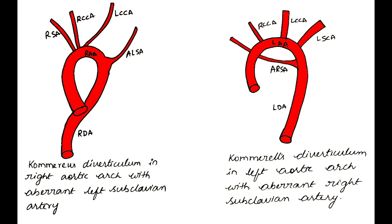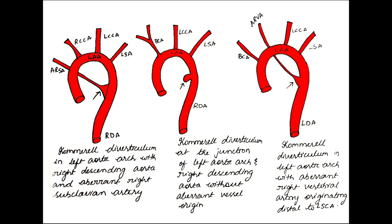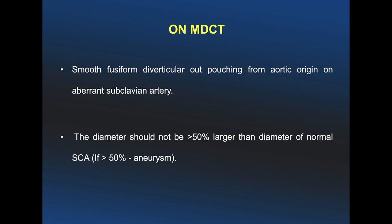The two most common types shown are: right aortic arch with right descending aorta and aberrant left subclavian artery, and left aortic arch with left descending aorta and aberrant right subclavian artery. There are also uncommoner types where there can be just a diverticulum without an aberrant subclavian artery, and other types as well.